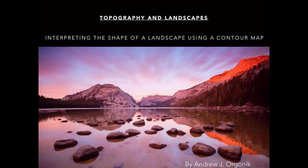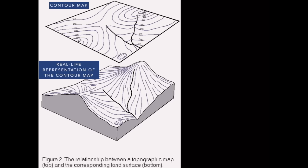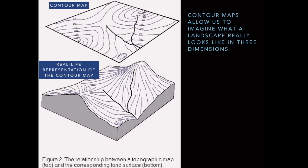Topography and Landscapes. Interpreting the shape of a landscape using a contour map, by Andrew J. We're going to be using contour maps in order to get a three-dimensional image in our mind of what the landscape actually looks like. A contour map allows us to imagine what a landscape looks like in three dimensions.